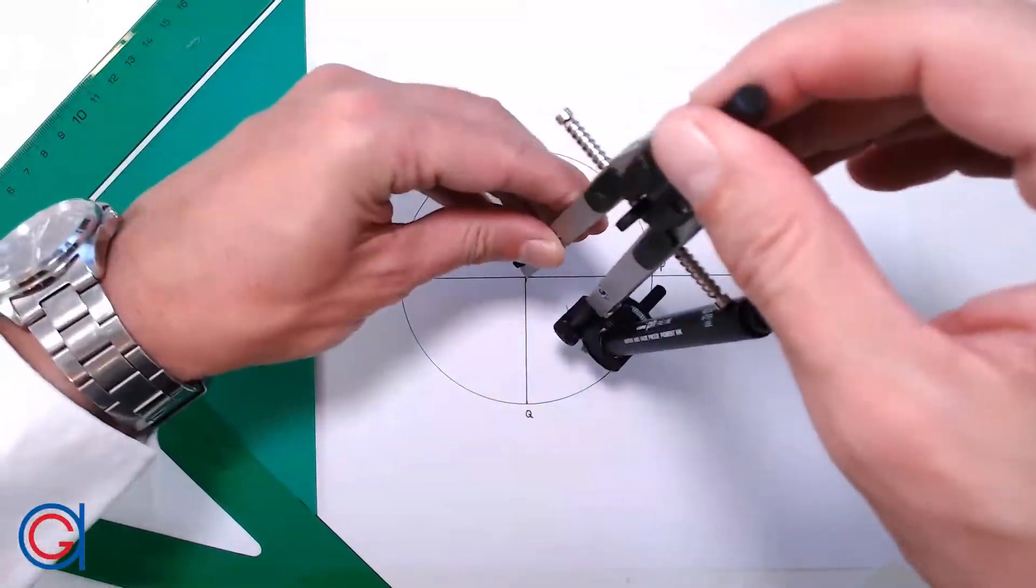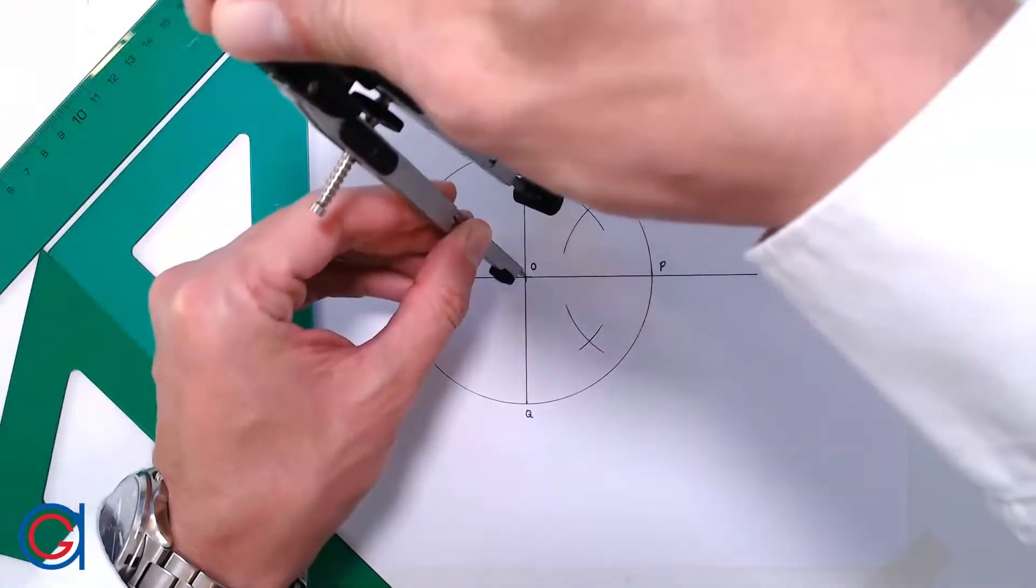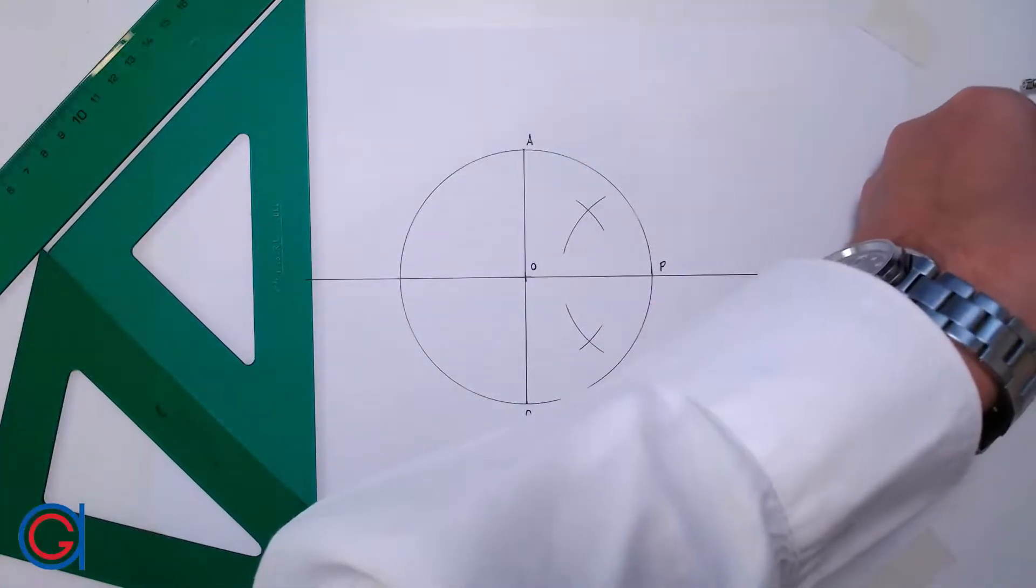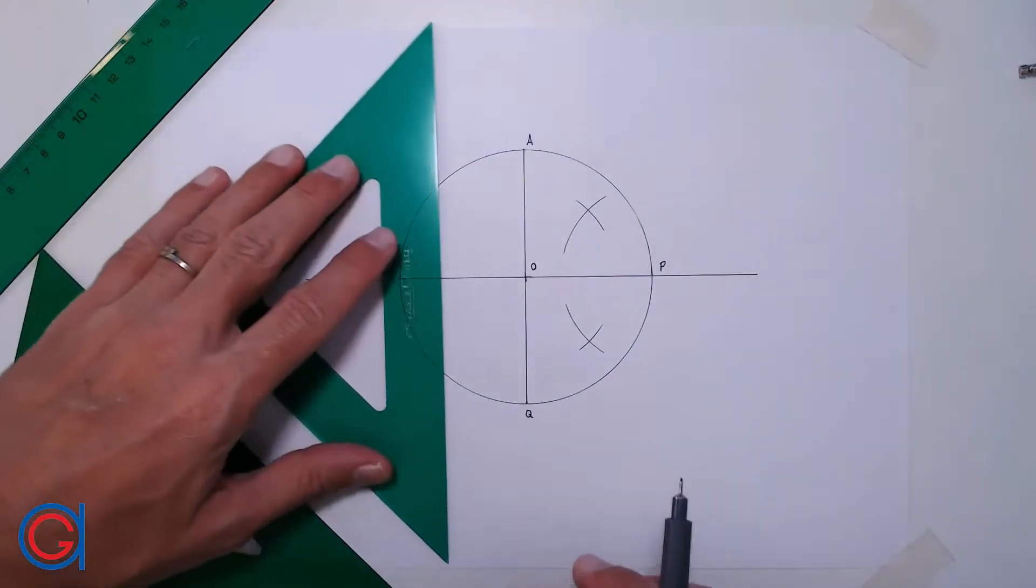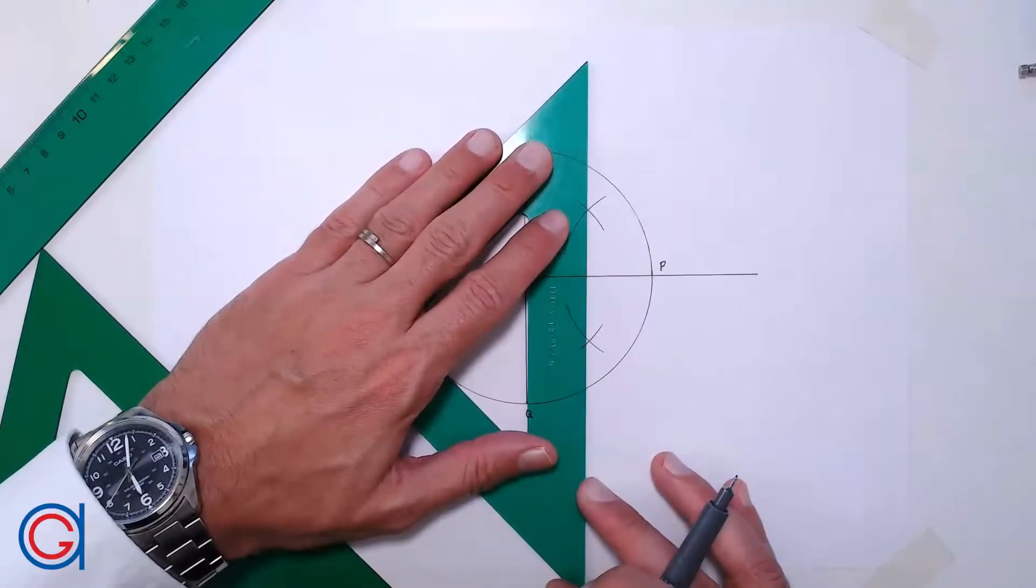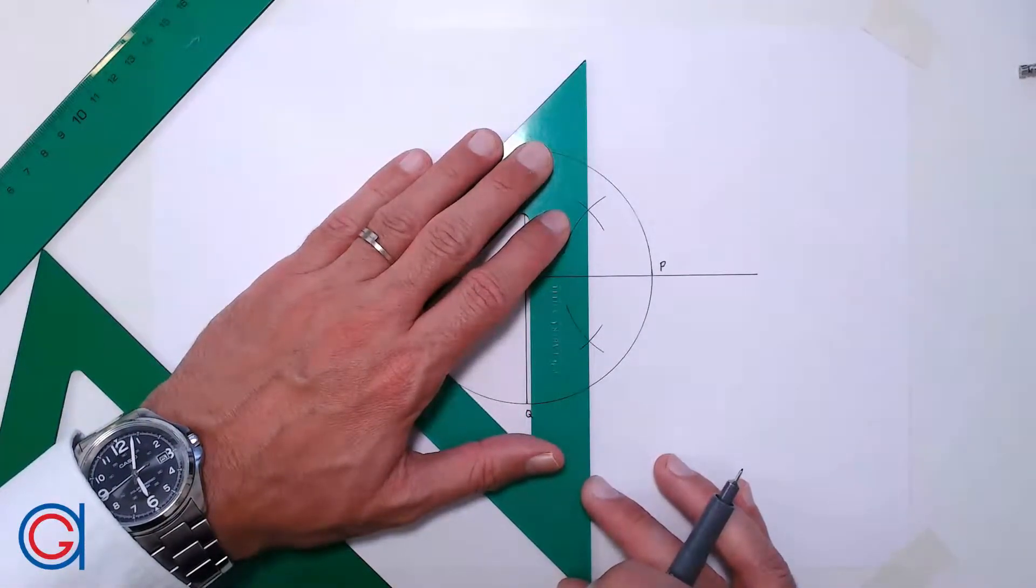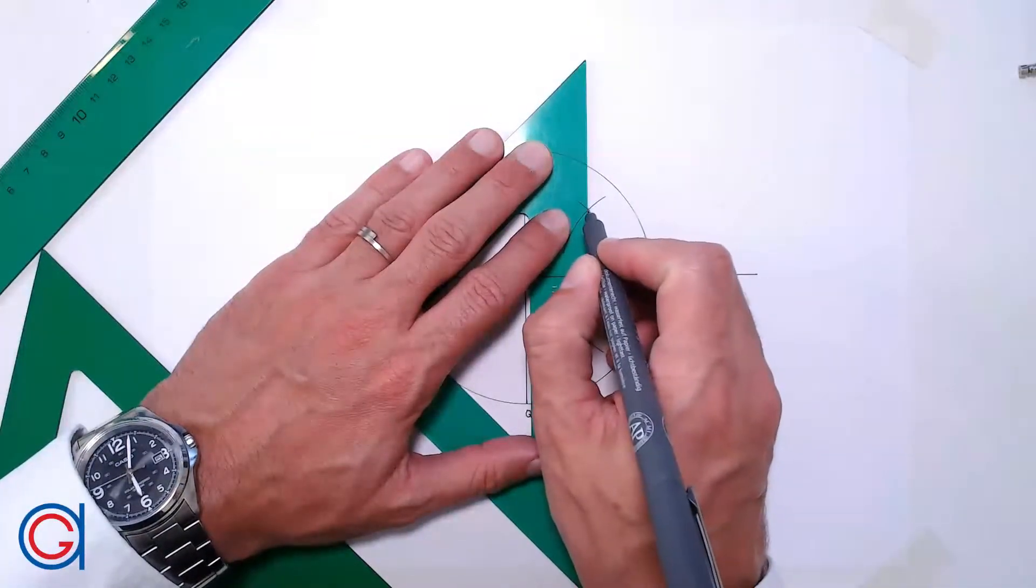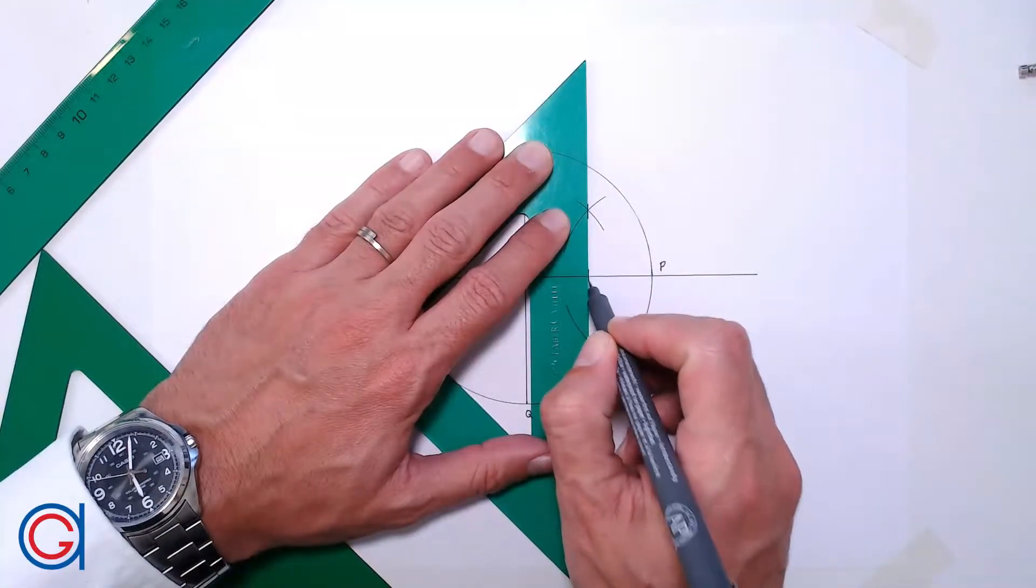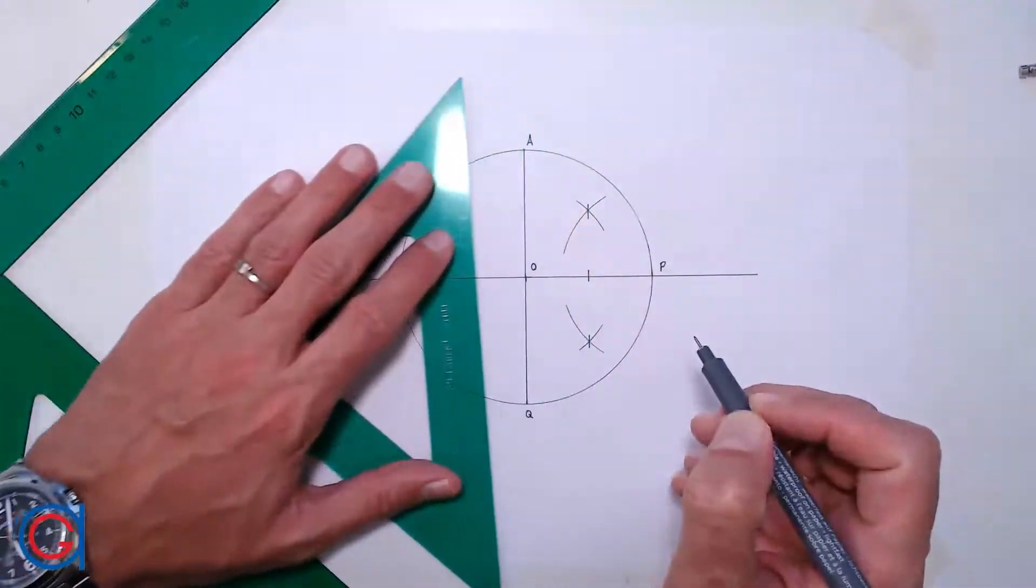And now, with the same radius and the compass centered on point P, we scribe another two arcs above and below the line, which intersect our previously drawn arcs at two points. And now, we will join these two points, and where it cuts the radius OP, this will be the midpoint M of the radius.